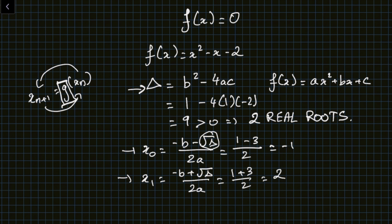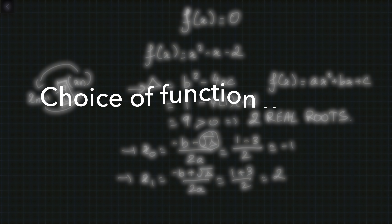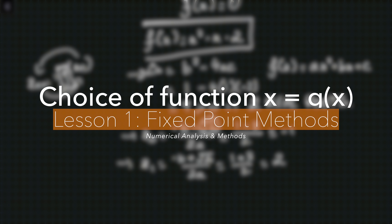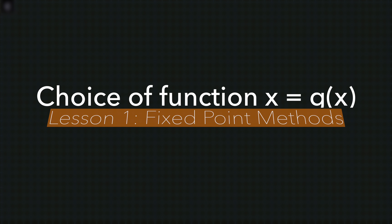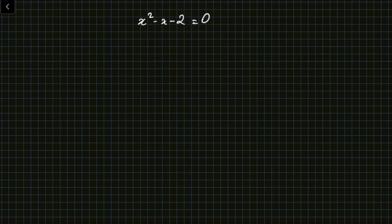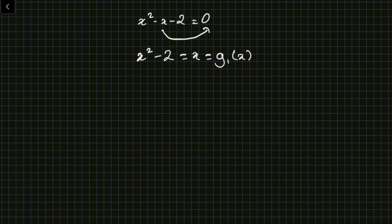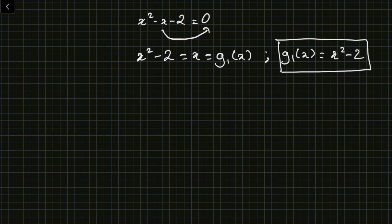There are many g's we can choose. For the example f(x) = x² - x - 2, the most straightforward approach is to manipulate the equation so that x equals something. Starting from x² - x - 2 = 0, I can rearrange to get x² - 2 = x, and there we go: g₁(x) = x² - 2.